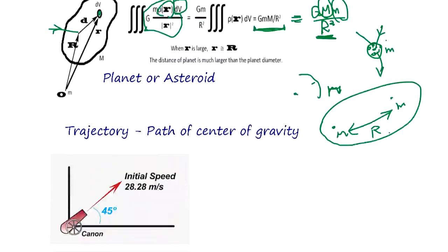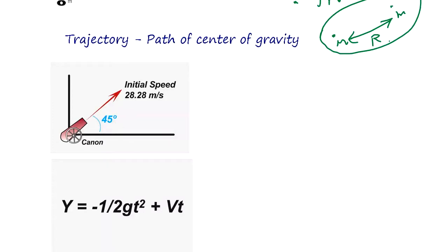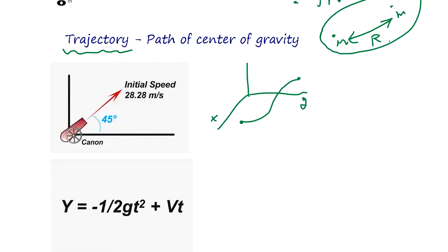In Newton's mechanics, another thing we need is trajectory. Trajectory describes how the center of mass moves in 3D space. For example, suppose we have a 45-degree angle with initial speed v0 = 28.28 meters per second, which means the initial velocity components are vx = 20 m/s and vy = 20 m/s.